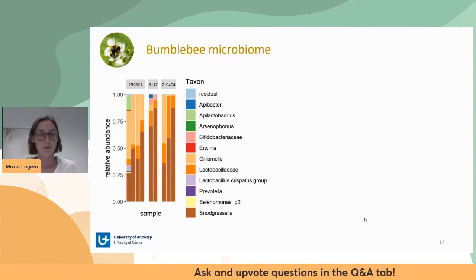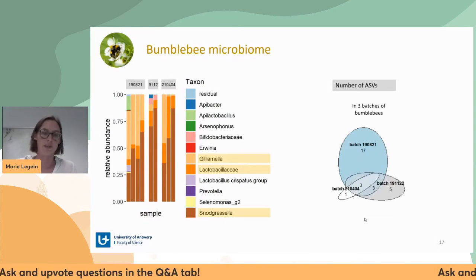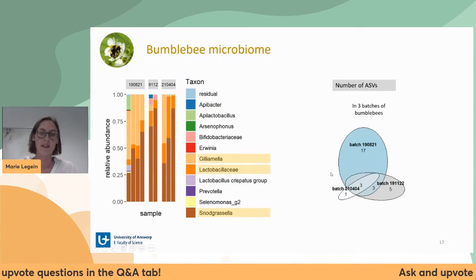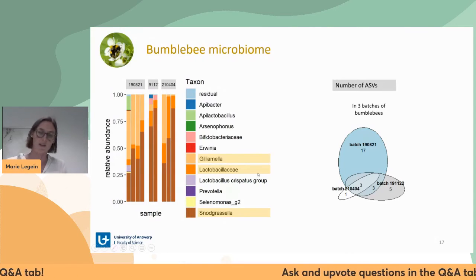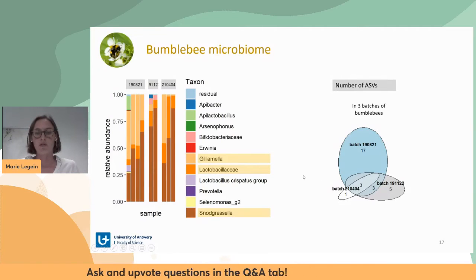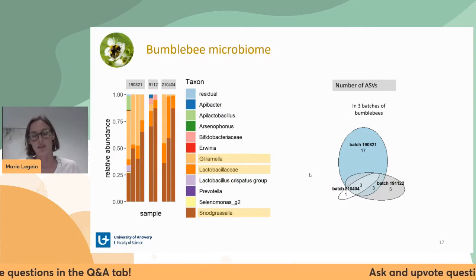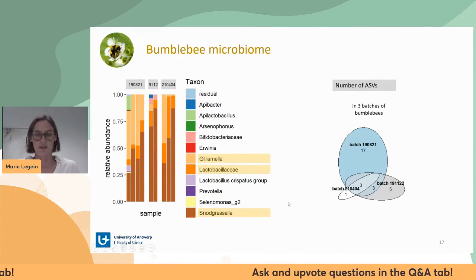For bumblebees, we ordered three different batches and in all three batches we saw high abundances of Gilliamella, Snodgrassella, and Lactobacillaceae bacteria. Looking at the overlap between the three batches, there were three ASVs identical across all batches — exactly those three genera just mentioned.